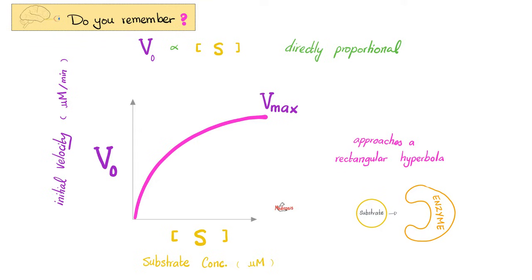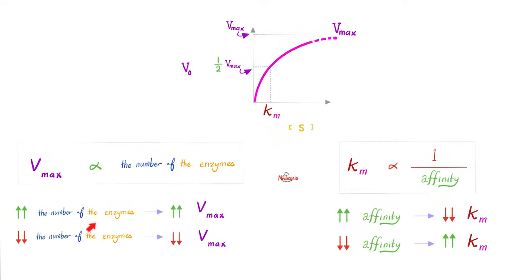Recall from Michaelis-Menten that substrate concentration and the rate of reaction are directly proportional until you hit Vmax. When I increase the number of enzymes available, Vmax goes up. When I decrease the number of enzymes available, Vmax goes down. When the affinity between substrate and enzyme goes up, Km goes down. When affinity goes down, Km goes up. If you want to know why, please watch the previous videos.